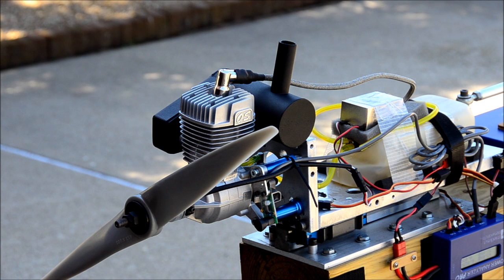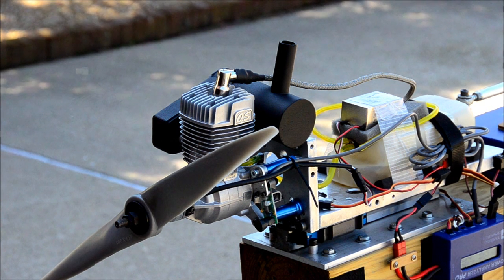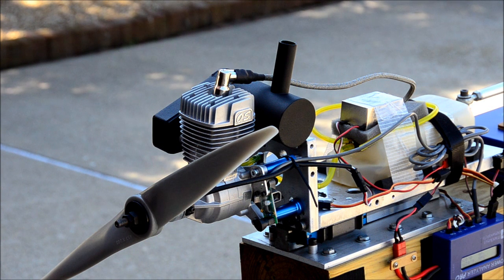This first test is just to demonstrate throttle response and then we'll do a computer controlled step test. So we'll start the engine, we'll warm it up by manual throttle control, then switch over to PC control where we'll run the engine at 5 seconds each at idle, 20%, 40%, 60%, 80%, and finally full throttle for 5 seconds each.